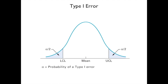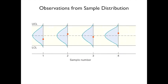The probability of a Type 1 error is represented by the small area under the curve beyond the upper and lower control limits. Here are some observations from a standard deviation. Shown is a normal distribution with sample 1, sample 2, sample 3, and sample 4 as individual observations.